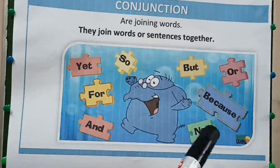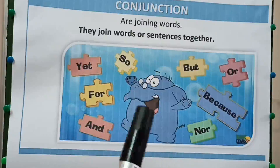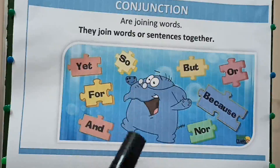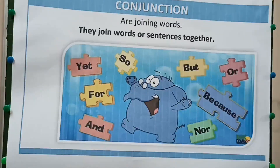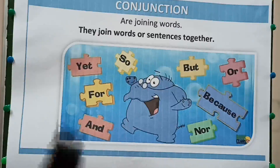Next is 'nor'. 'Nor' is used for two non-contrasting grammatically negative items. For example, both the sentences are negative: he doesn't eat cake, nor does he eat biscuits.